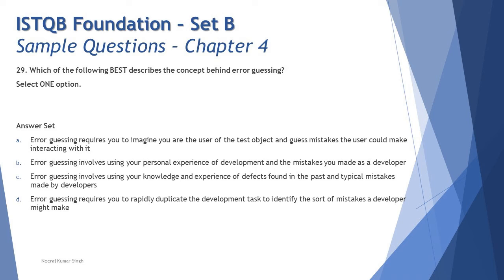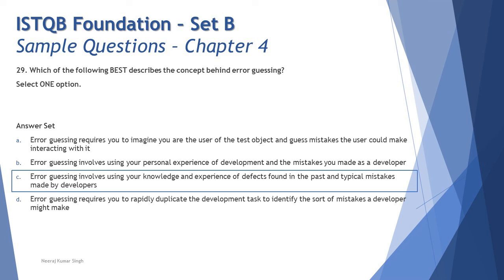Putting it all together, error guessing is more about guessing errors in the product from our past experience, knowing about typical defects, and predicting the corner cases where developers can go wrong. The right answer is C: error guessing involves using your knowledge and experience of defects found in the past and typical mistakes made by developers — not you playing the role of the developer. Hope that makes sense. That was the last question from chapter 4; we'll be continuing with chapter 5.